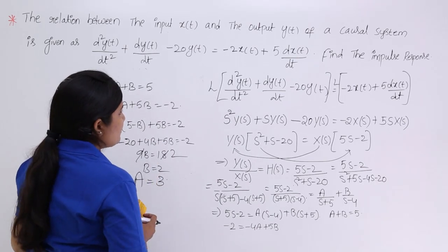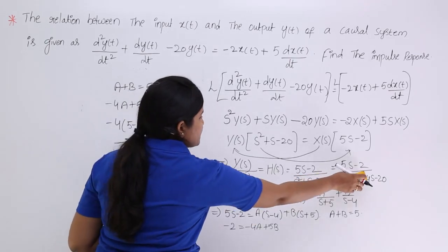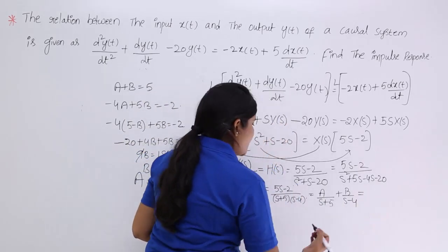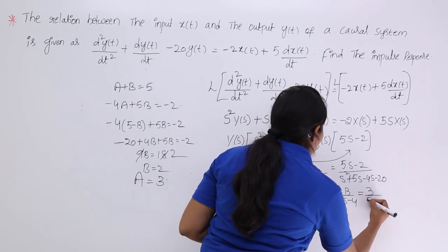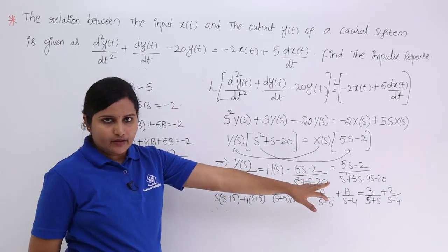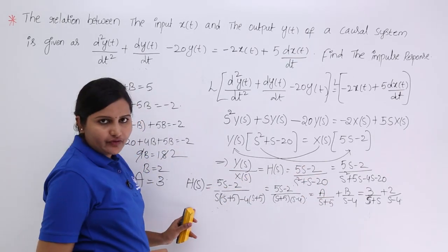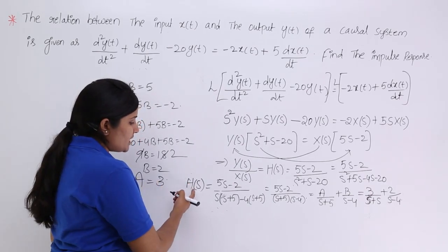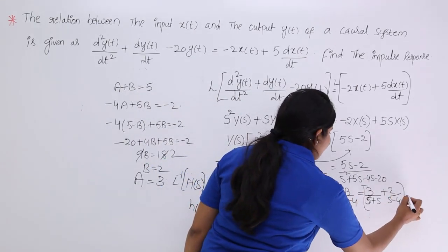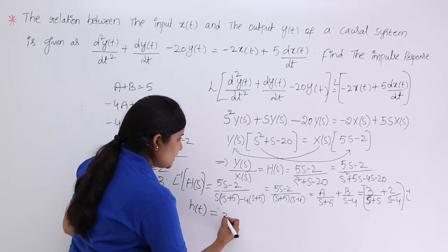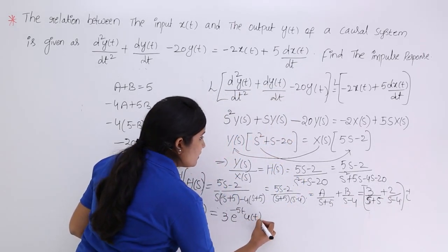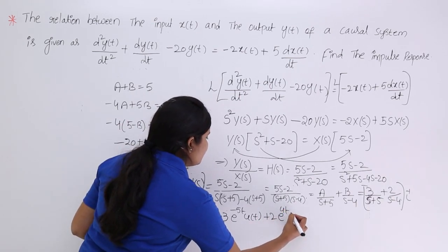With A = 3 and B = 2, we have H(s) = 3/(s + 5) + 2/(s − 4). Taking the inverse Laplace transform, using the pair 1/(s + a) ↔ e^(−at)·u(t): h(t) = 3·e^(−5t)·u(t) + 2·e^(4t)·u(t). Note that a minus sign in the denominator corresponds to a positive exponent, and a plus sign corresponds to a negative exponent.